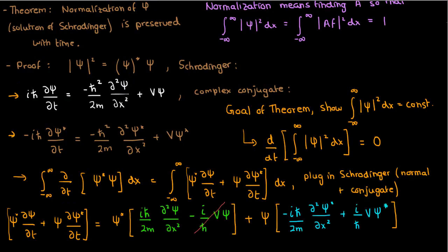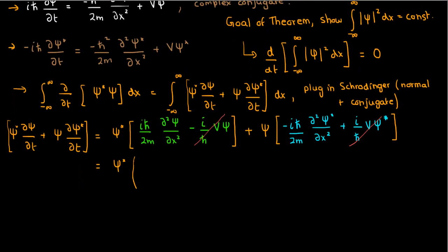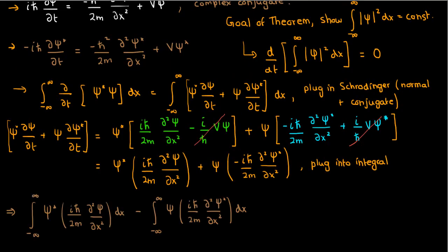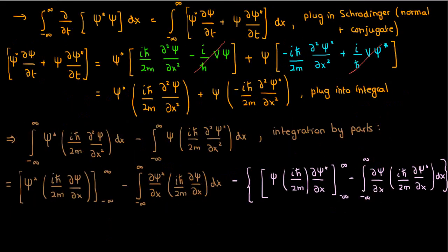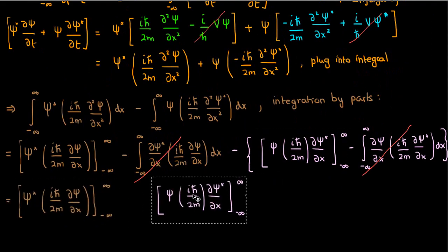The potential energy terms would cancel out and we'd just be left with the kinetic energy operators. Now let's take this and plug it back into our integral. From here, we can use integration by parts on both integrals to simplify our expression.